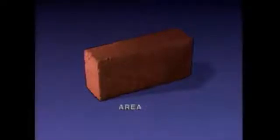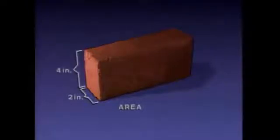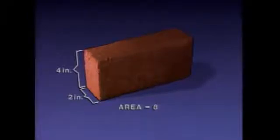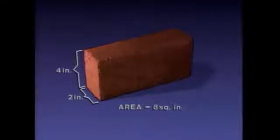Area is a measure of a two-dimensional surface, and volume is a measure of a three-dimensional object or space. Let's use this brick to see how length measurements are used to calculate area and volume. For our discussion of area, we'll focus on this surface. This length measurement is two inches and this one is four inches. The area is calculated by multiplying these two measurements together, so two times four is eight. Since area is a two-dimensional surface, it is expressed in square units. For this example, since both sides were measured in inches, the area measurement is expressed in square inches.